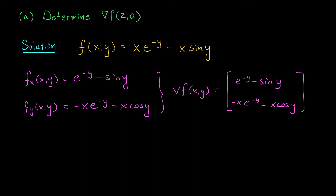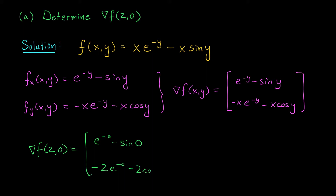Fantastic. We can wrap up this part of the problem by plugging in (2, 0) for x and y. We find that the gradient of f at (2, 0) is: first entry e^0 - sin(0), second entry -2e^0 - 2·cos(0). Simplifying: e^0 = 1 and sin(0) = 0, so the first entry is 1. For the second entry, -2·1 - 2·1 = -4.